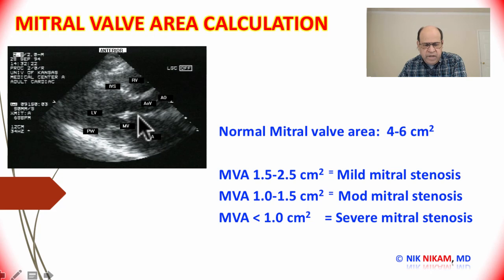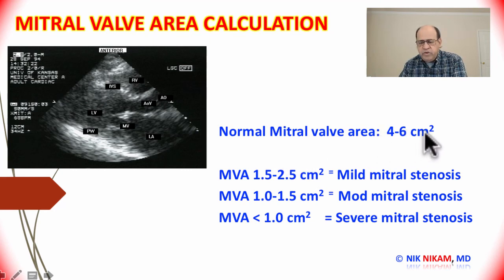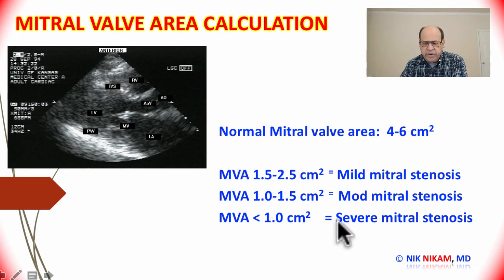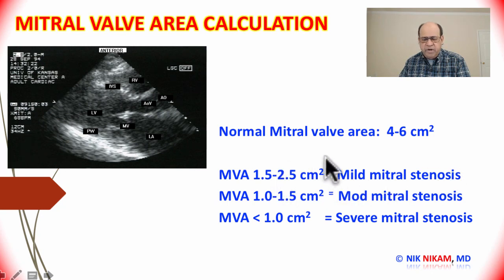We can also calculate the mitral valve area using 2D echocardiography with the velocity technique, using the mitral valve velocity to calculate the area. The normal mitral valve area is between 4 to 6 centimeters squared. If the mitral valve area is less than 1 cm², it is considered severe mitral stenosis. Between 1 and 1.5 cm² is moderate mitral stenosis. Between 1.5 and 2.5 cm² is mild mitral stenosis. Anything above 2.5 cm² is within normal range.